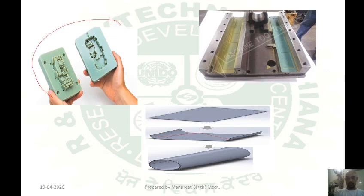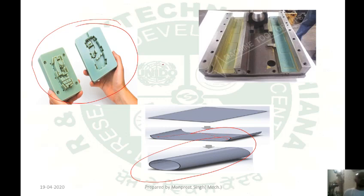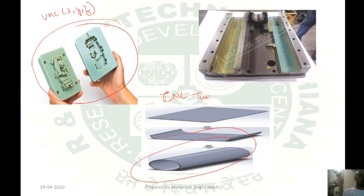An unsymmetrical design means the part is not symmetrical. We machine unsymmetrical parts on VMC (Vertical Machining Centre) which has x, y and z-axes. Symmetrical parts are always machined on CNC turning lathes which have only x and z-axes — y-axis is not there.